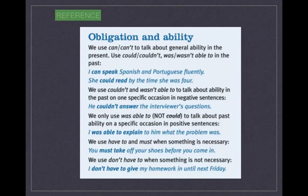We spoke about obligation and ability. We use can or can't for general ability in the present. We use could, couldn't, or wasn't able to in the past — for example: 'She could read by the time she was four.' We use couldn't and wasn't able to for ability in the past on one specific occasion in negative sentences: 'He couldn't answer the interviewer's questions.' We only use was able to, not could, for a specific occasion in positive sentences: 'I was able to explain to him what the problem was.'